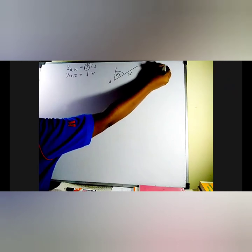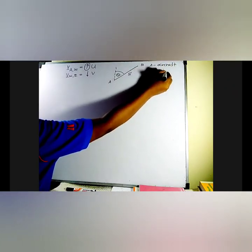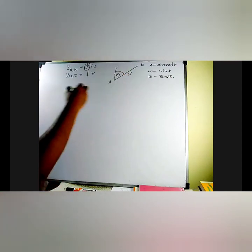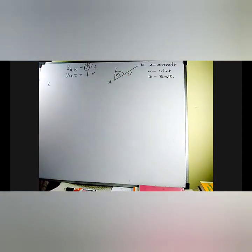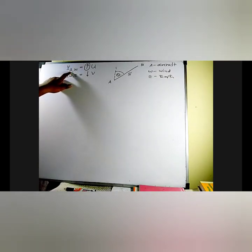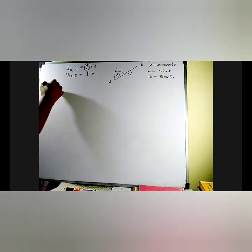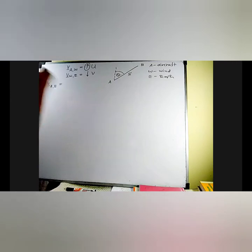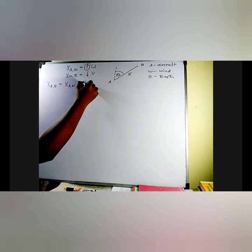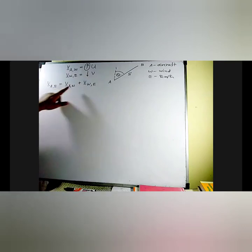Now we have to label these letters. A is for aircraft, W is for wind, E is for earth. Apply the relative velocity equation. What is the missing velocity? We have to find velocity of aircraft with respect to earth. We know the velocity of aircraft with respect to wind, so between A and E I can put W.